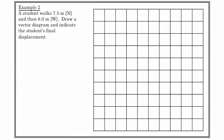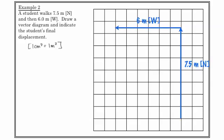Here's our final example in this lesson. A student walks 7.5 meters north and then 6 meters west. Draw a vector diagram and indicate the student's final displacement. This is a scale diagram: 1 centimeter squared is equal to 1 meter squared. On this diagram, if these are centimeter squares, then what we'd have is 7.5 meters north and 6 meters to the west. The displacement vector, the final displacement, is where we started to where we ended.